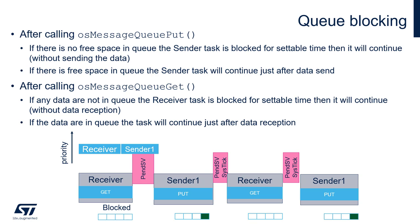If there is free space in the queue, the sender will continue execution. The next instruction will be executed just after it sends data to the queue — it will not wait for the settable timeout, but continue immediately after sending. This is an important consideration when calculating timings within tasks.